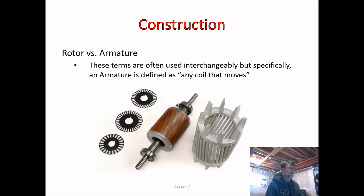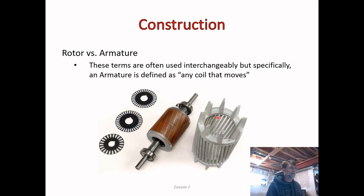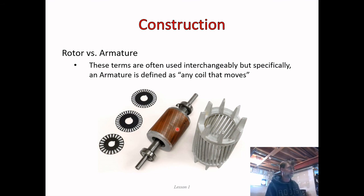So we have two different things that might be rotating in the middle of our machine: an armature, which has a coil of wire through which we put current to create a magnetic field, and a rotor, which has bars that are shorted out to create a magnetic field by a different principle. In terms of when to use these terms — they get swapped back and forth, but broadly speaking, an armature is any coil that moves.